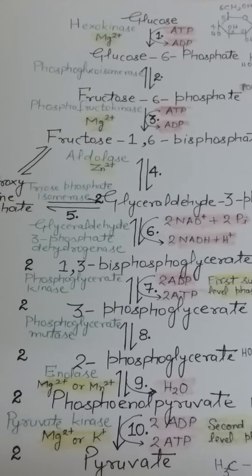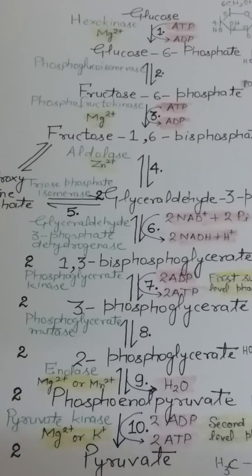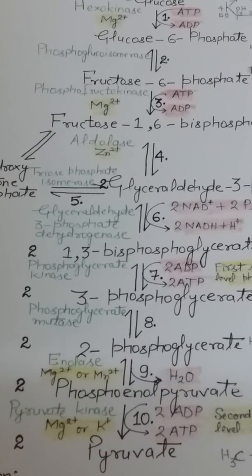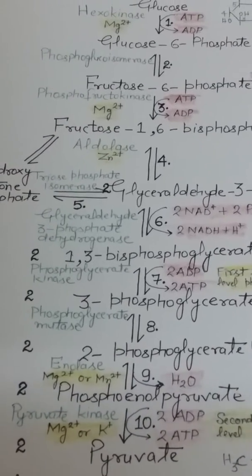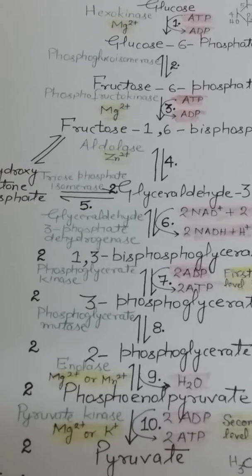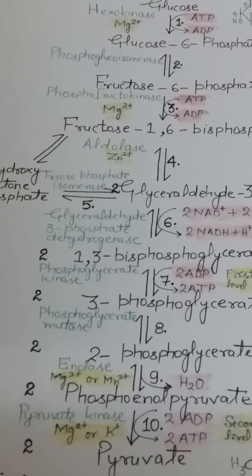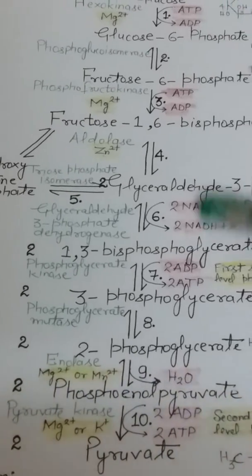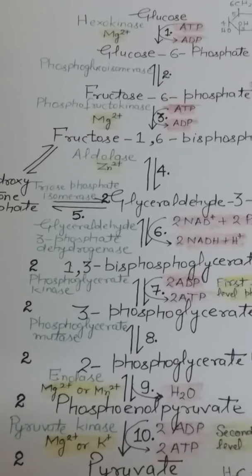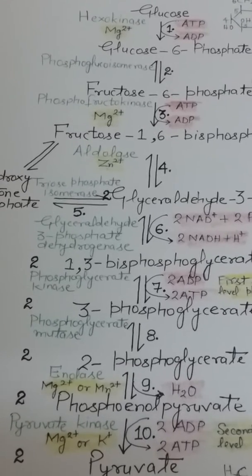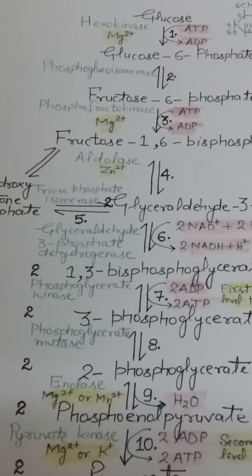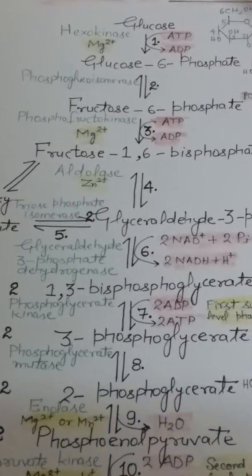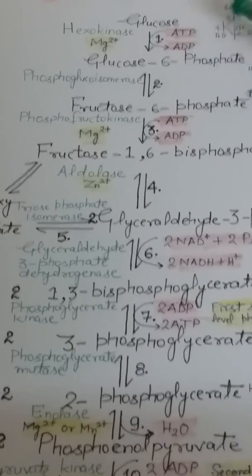The first half of glycolysis is called the preparatory phase or energy investment phase. You can see that in the first step and the third step, energy is being used. There are a total of 10 steps, and the first five steps constitute the preparatory or energy investment phase.